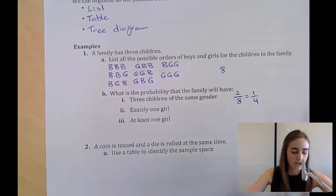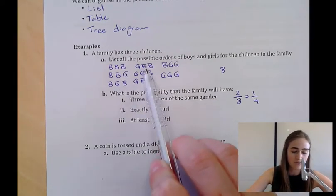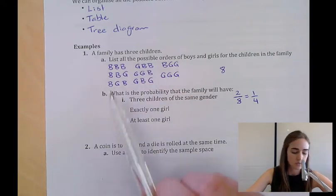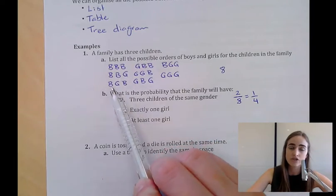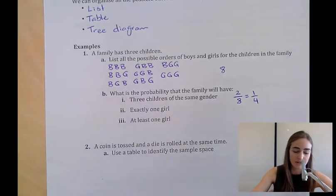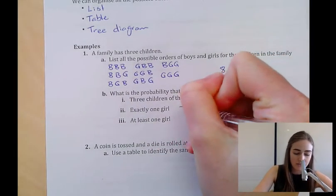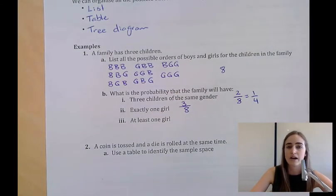Exactly one girl could happen in three different ways. We could have the last child a girl, the middle child a girl, or the first child a girl. That's happening three times out of a total of eight different ways.